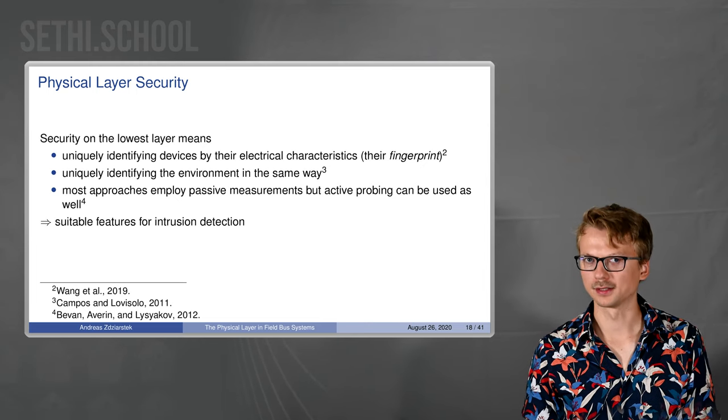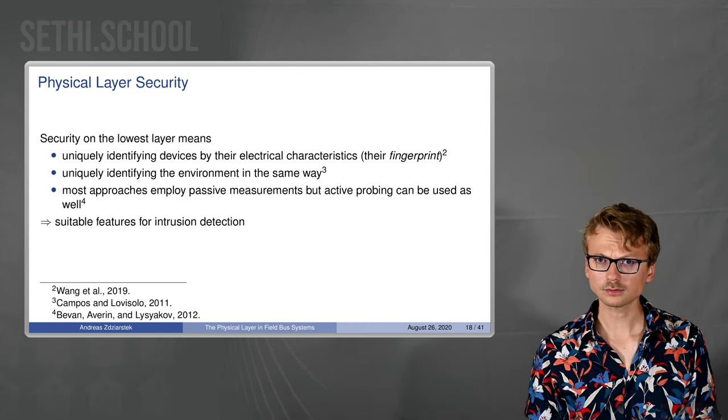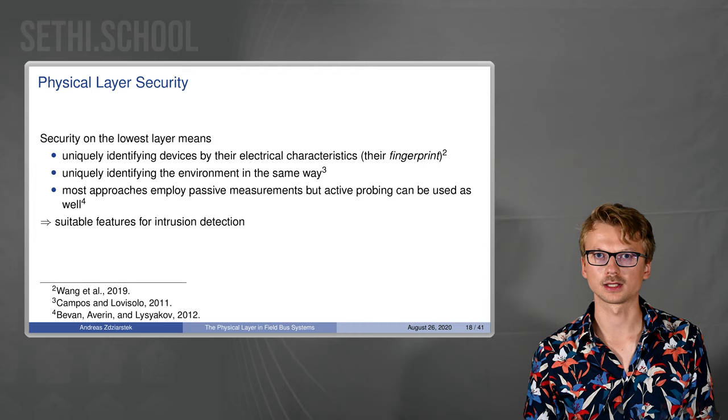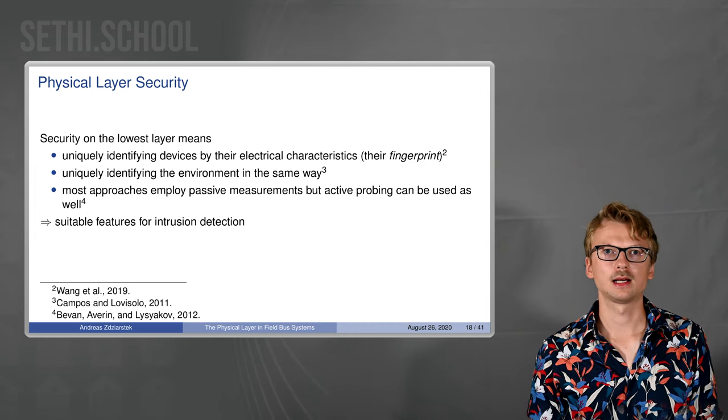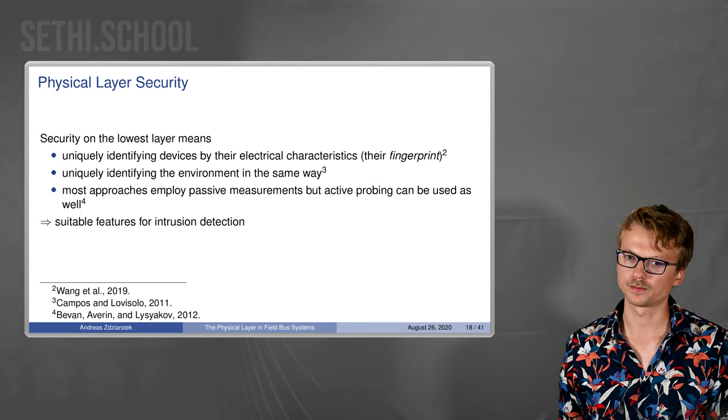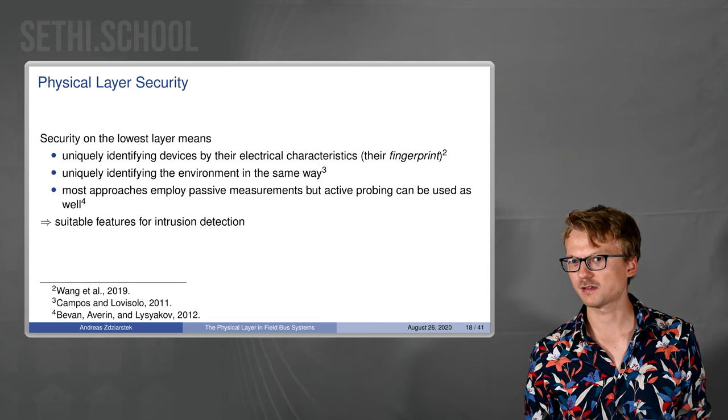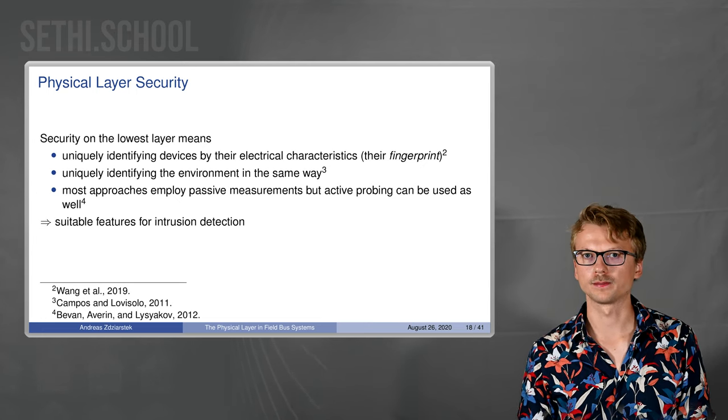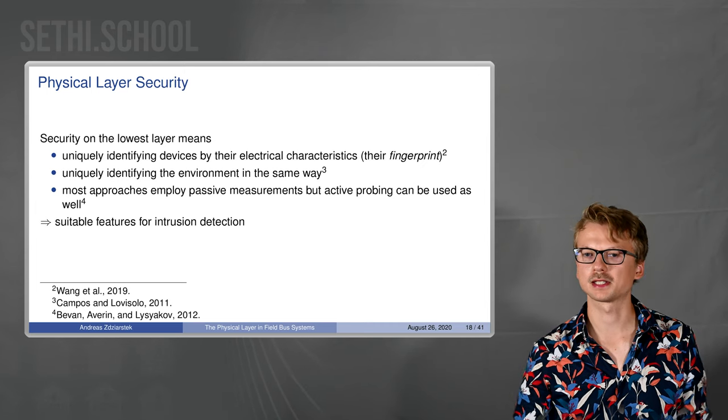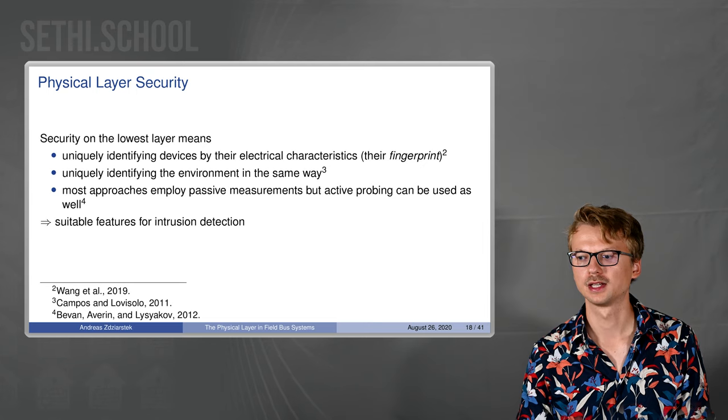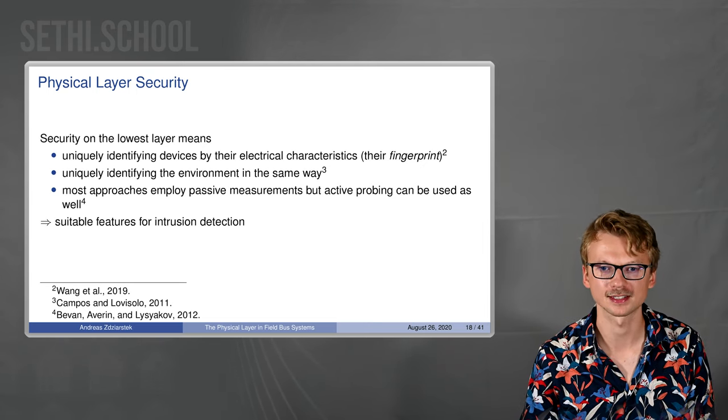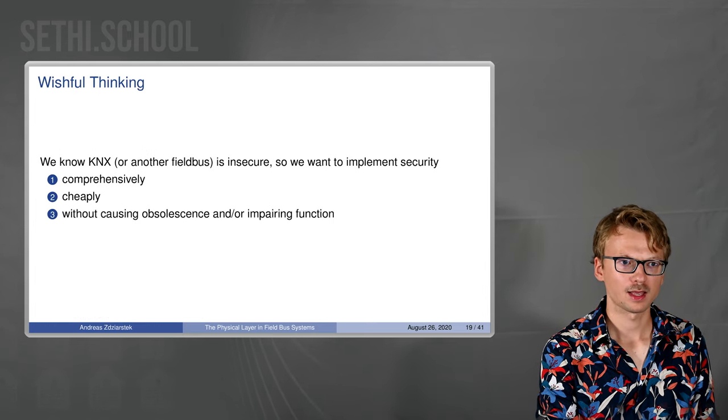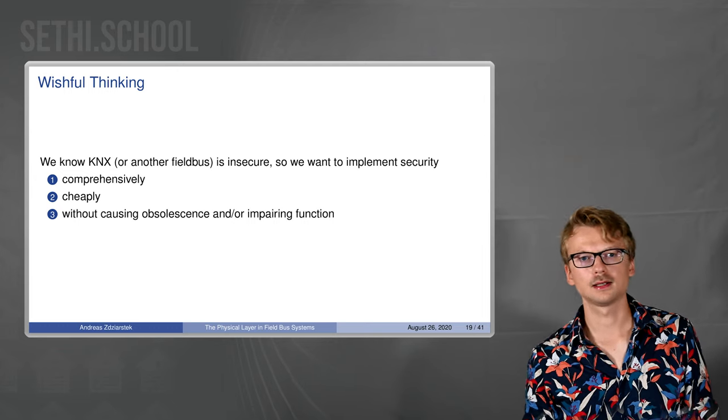For KNX it would be trying to uniquely identify the devices connected to a lighting line, the controller, the switches, the lights or the AC unit or whatever. And also uniquely identifying the environment, meaning how the cables are connected and how long they are. The way we do that is by analyzing the electrical characteristics of the signals and giving it a unique signature, what is usually called a fingerprint. Most approaches do this passively by listening very hard, in this case meaning with an oscilloscope or similar hardware. But it's also possible to do a bit like ultrasonic radar-like stuff, basically feed something into the cable and see what comes out.